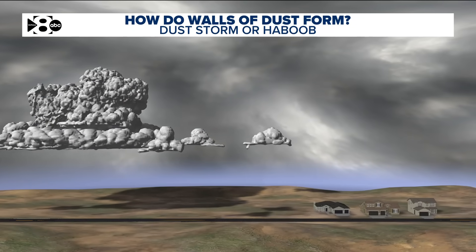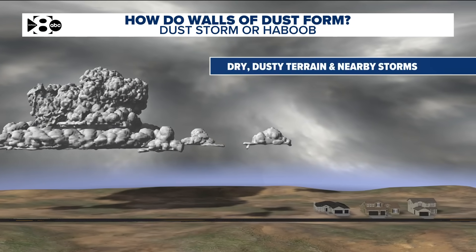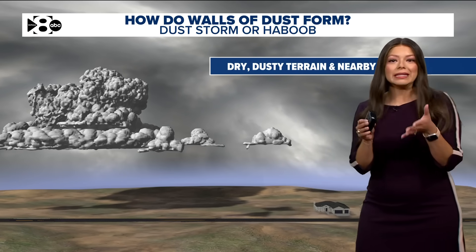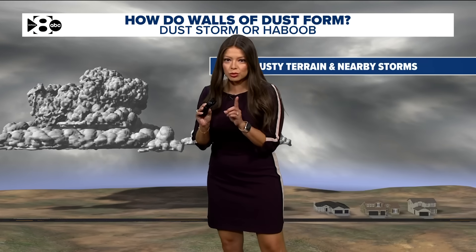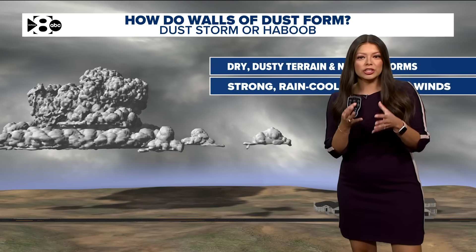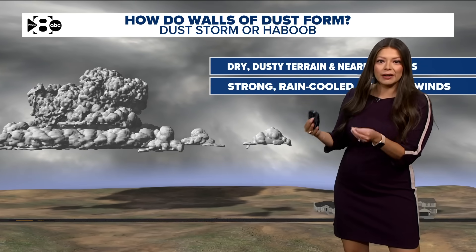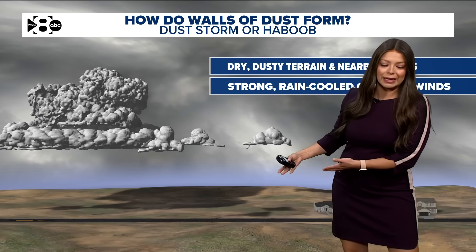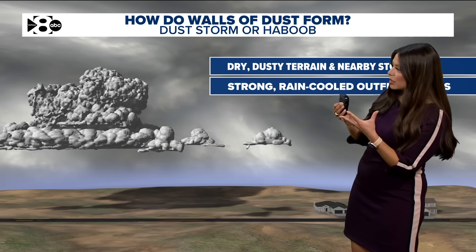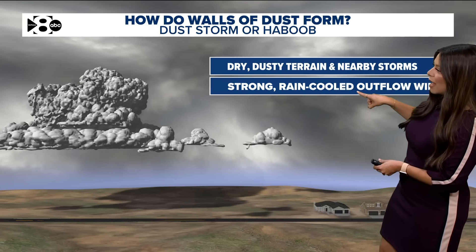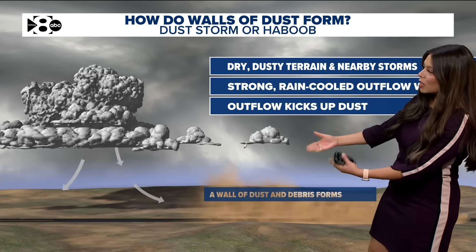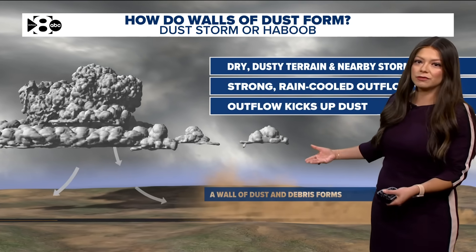So how do they form exactly? First and foremost, you need the correct terrain — dry, dusty terrain, which you see in Arizona. You also need a nearby thunderstorm. In this case, they have monsoon rains right now, meaning strong storms. Whenever you have a really sharp temperature contrast — a very high temperature somewhere like Phoenix — and then you have rain-cooled air in a thunderstorm, you create these really strong outflows. Once that outflow hits the ground, it picks up a lot of this dust, and that's what creates a wall of dust.